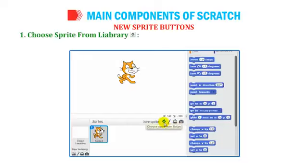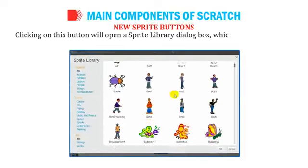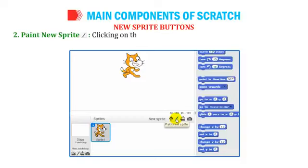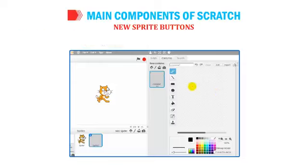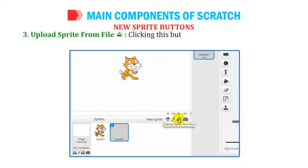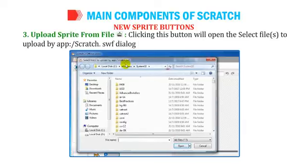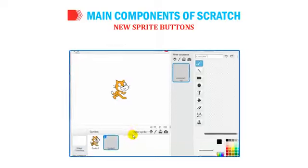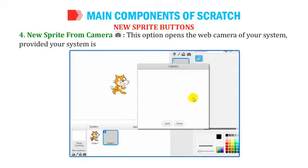There are four ways to add a sprite: (1) Choose Sprite from Library — clicking this opens a sprite library dialog box with many inbuilt sprite options. (2) Paint New Sprite — opens the costumes window where you can draw a new sprite. (3) Upload Sprite From File — opens a dialog box to choose a sprite from files stored on your computer. (4) New Sprite From Camera — opens the web camera of your system if equipped.